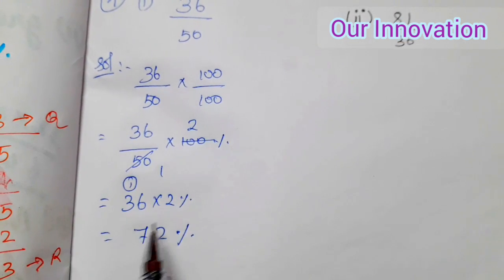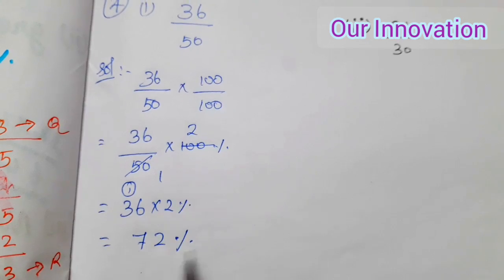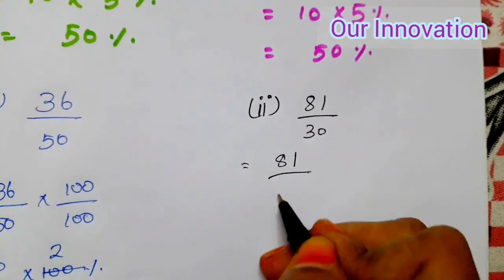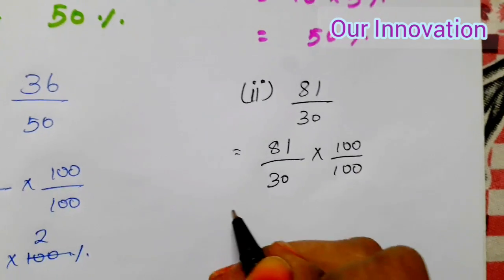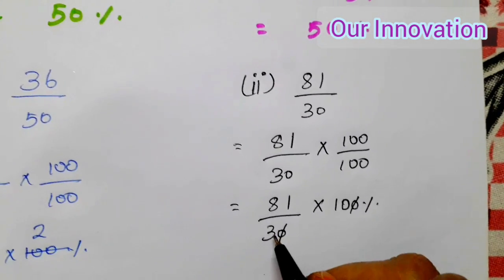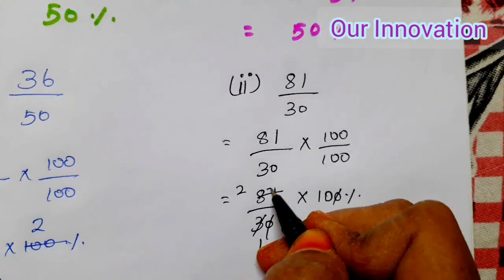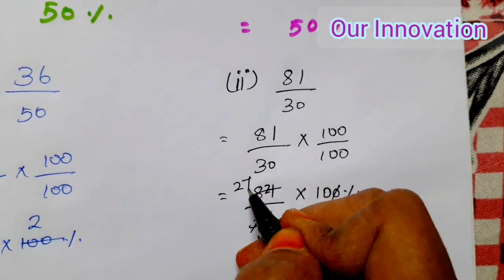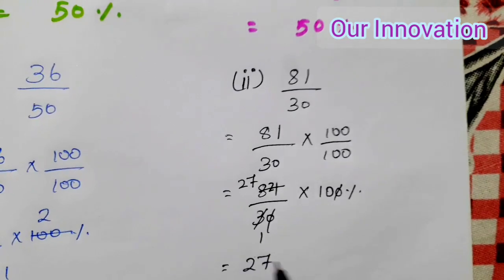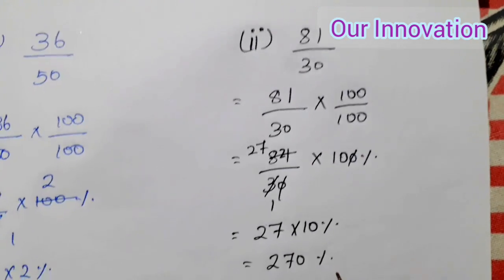Now working through the next calculation: percentage equals 36.2. By 30 into 100 percentage. After cancelling using the third table, the result gives 27 into 10 percentage, which equals 270 percentage.